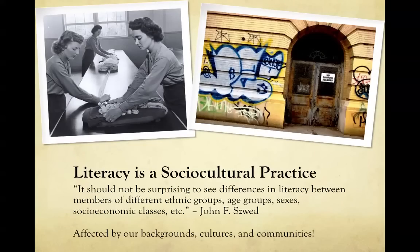One of the major ideas I want to get across in this lecture is that literacy is a socio-cultural practice. That means literacy is formed through social and cultural forces, and it looks different in different cultural groups. When looking at different ethnic groups, age groups, sexes, and socioeconomic classes, literacy changes because what we value in those different cultural groups changes and we interact differently. Our social interactions, the communities we're in, our backgrounds and cultures are what form our literate practices.